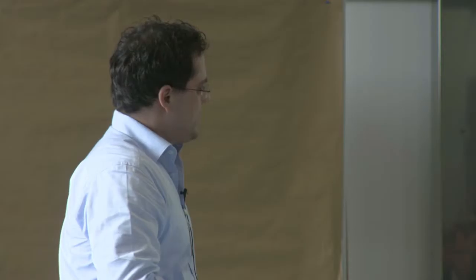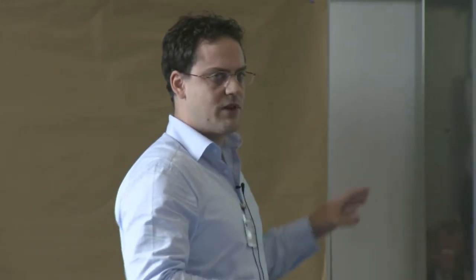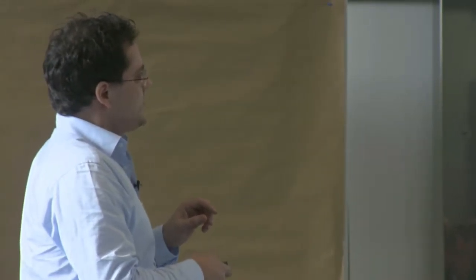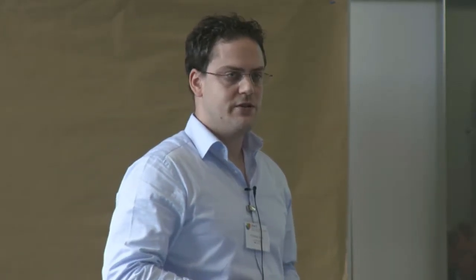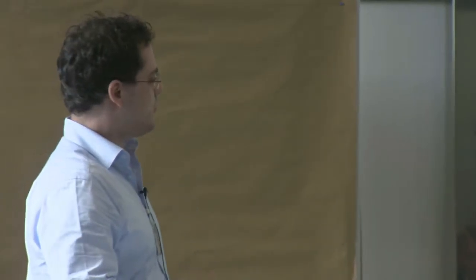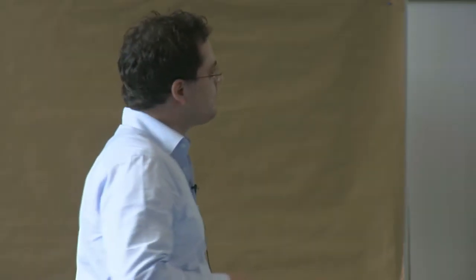The last two steps — presenting data and drawing evidence-based conclusions — I will skip here. The potential benefits of the systematic review methodology are: they can increase precision by means of quantitative data synthesis; they minimize bias through the elaboration of a review protocol and the impartial application of assessment criteria, including selection and critical appraisal criteria; they increase transparency through thorough documentation of the review process; and they facilitate stakeholder involvement and transparent communication of assessment details, increasing the traceability of the provided conclusions.